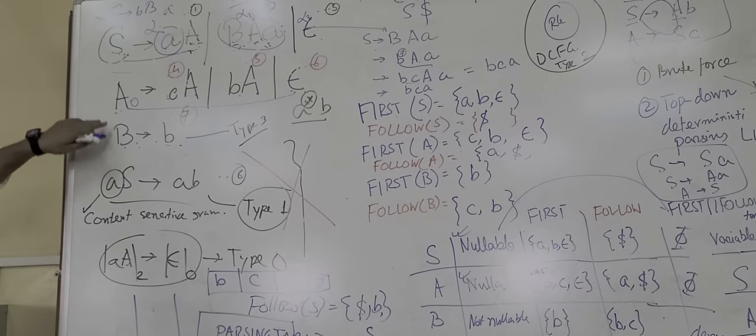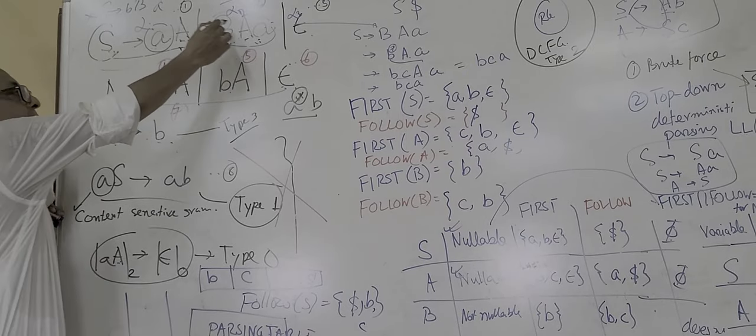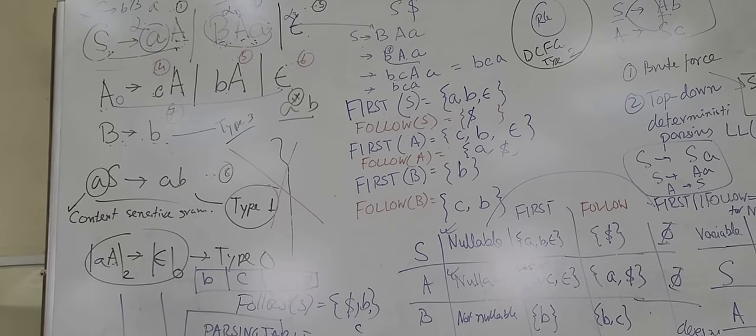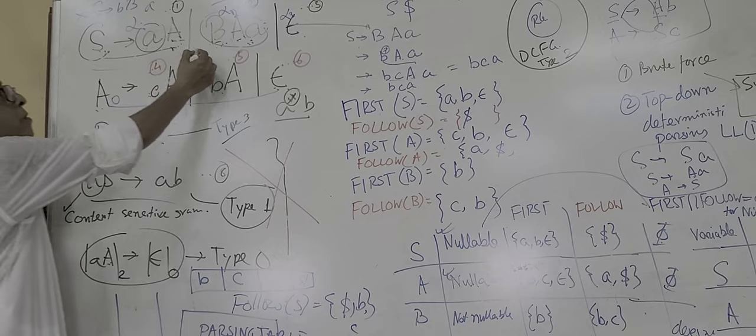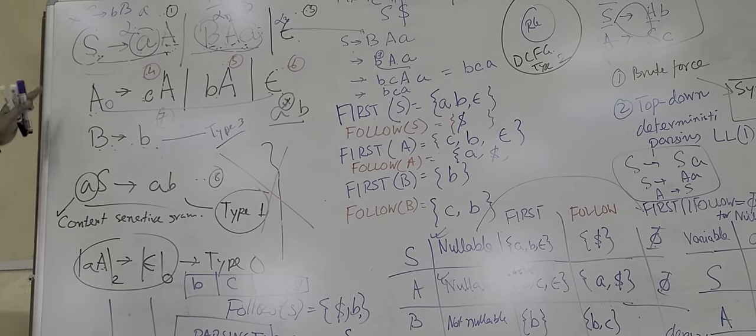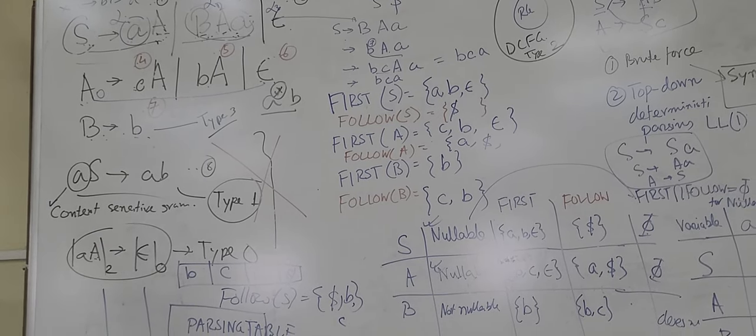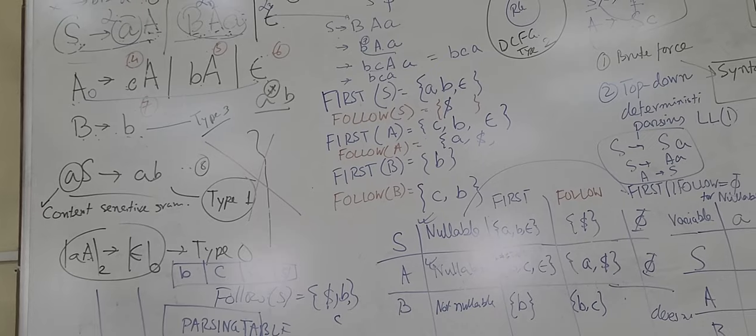This grammar, by inspection, has no left recursion, but it is a type 2 grammar. This is not a regular grammar, by this rule. So it is a type 2 grammar, no left recursion. So this is a maybe case for top-down parsing. So how to check it?